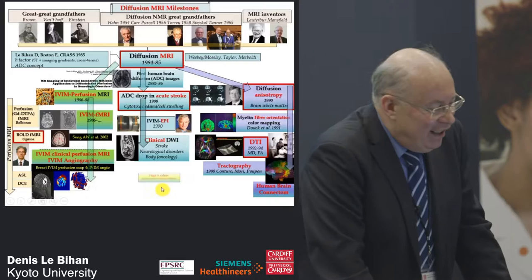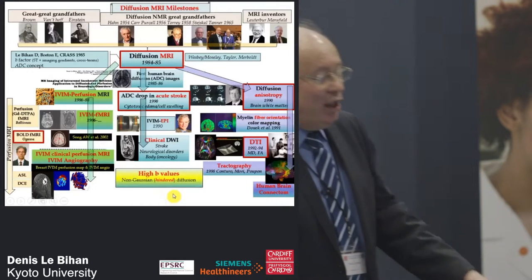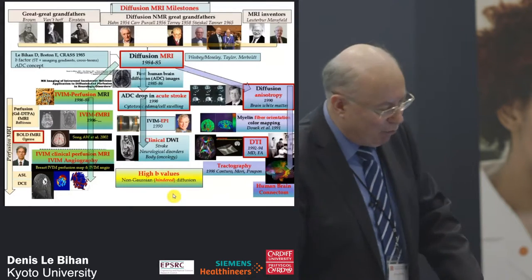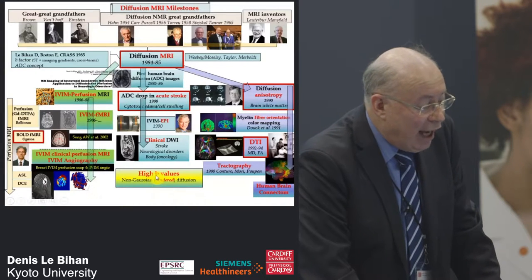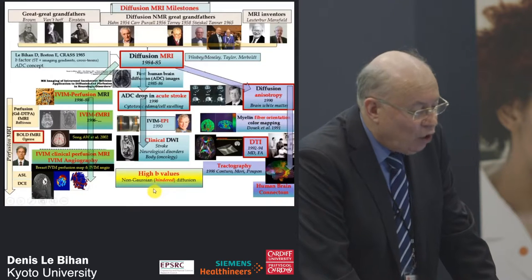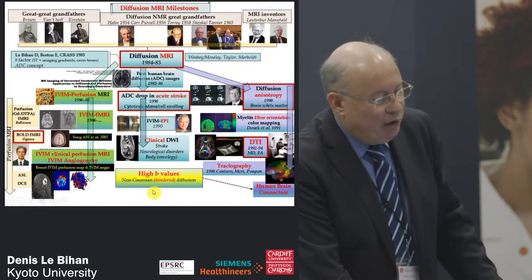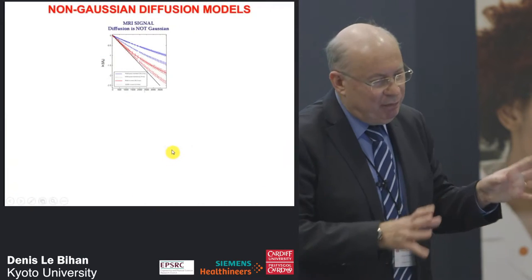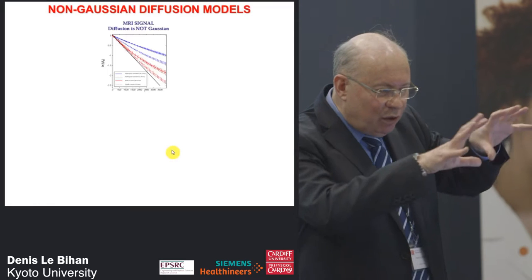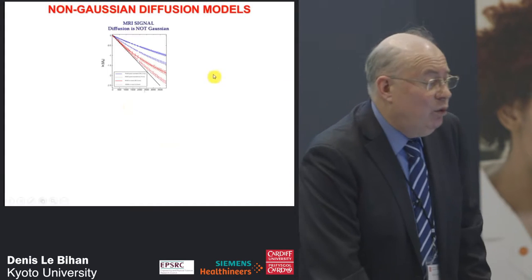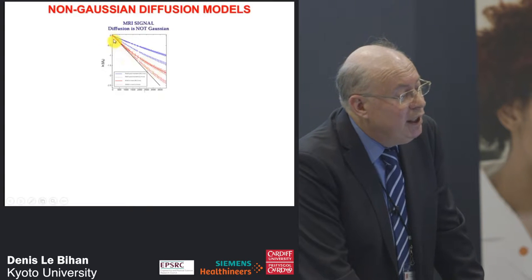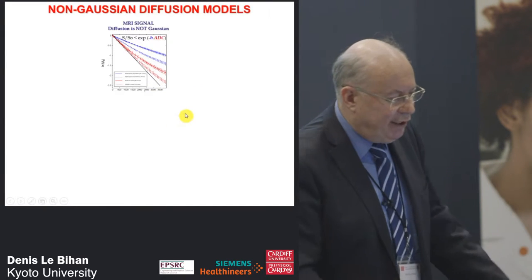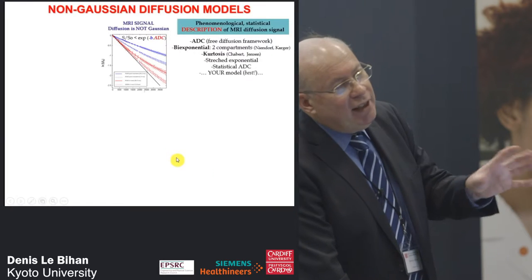Something which also changed our lives was tremendous progress in gradient hardware, epitomized by the Connectom gradient from Siemens, allowing high B-values and non-Gaussian diffusion analysis — going beyond the ADC. It's used for the Human Connectome Project but has also entered clinical imaging. At high B-values we don't get a straight line as with free diffusion; there's a curvature because water molecules interact with obstacles and diffusion is non-Gaussian.